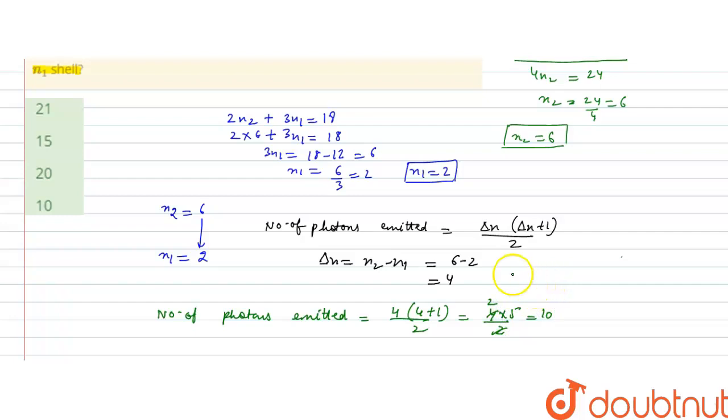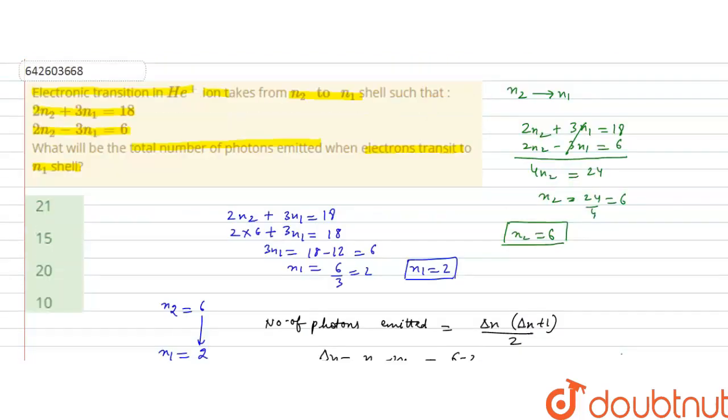It means the total number of photons that are emitted is equals to 10. The correct option for this is D, option 10. I hope you understood the solution. Thank you.